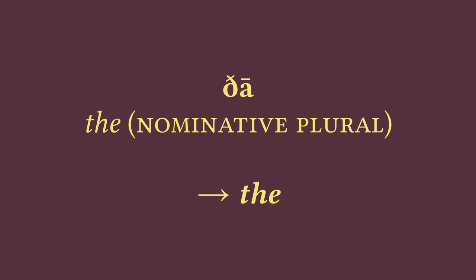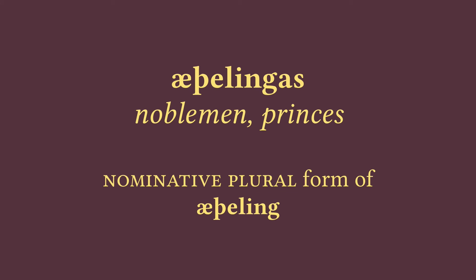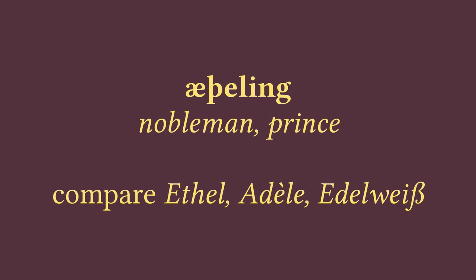Now, 'þā' is a plural form, so we'd expect a plural noun coming after it, and we get one: 'æðelingas,' which means 'princes' or 'noblemen.' It's a plural form of the noun 'æðeling.' That AE combination is called 'ash,' and it represents an 'ah' sound like in 'trap' or 'hat.' In the word 'æðeling,' we see the return of that '-ing' suffix we saw in 'cyning' — the one that means 'belonging to.' The first part, 'æðel,' means 'noble,' and this is the same root that gives us the name 'Ethel,' as well as 'Adele' through French, and the flower 'edelweiss' — a compound of the German words 'edel,' meaning 'noble,' and 'weiß,' meaning 'white.'